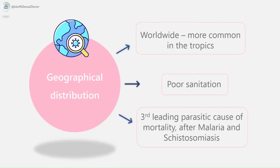Entamoeba histolytica is worldwide in prevalence, being much more common in the tropics. It has been found wherever sanitation is poor, in all climatic zones from Alaska at 61 degrees north to the Straits of Magellan at 52 degrees south. About 10% of the world's population and 50% of inhabitants of developing countries may be infected. About 1% of Americans are reported infected. While 80–99% of infected humans are asymptomatic, invasive amoebiasis causes illness in an estimated 50 million people and 50,000 deaths annually, mostly in tropical Asia, Africa, and Latin America. It is the third leading parasitic cause of mortality, after malaria and schistosomiasis.